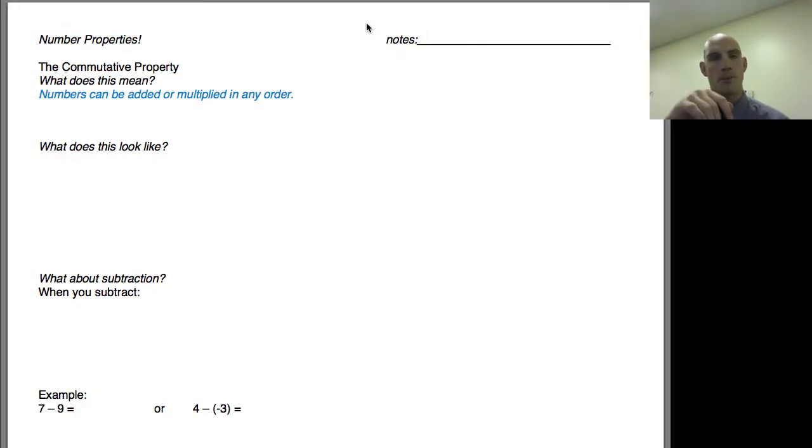Welcome back. Today we're going to talk about number properties. There are a couple of specific properties that help us when dealing with numbers in terms of setting us up to use the order of operations. The first one is called the commutative property. The commutative property has to do with the order that we do things in. The basic breakdown of commutative property is numbers can be added or multiplied in any order.